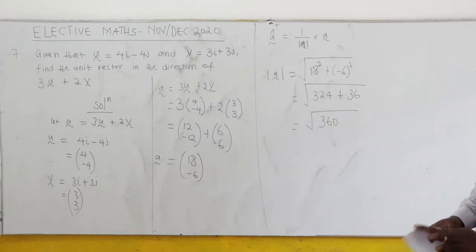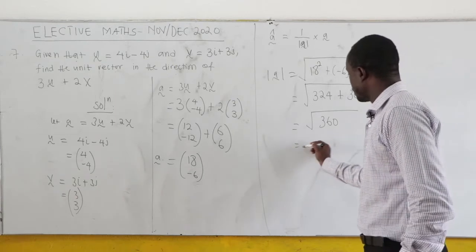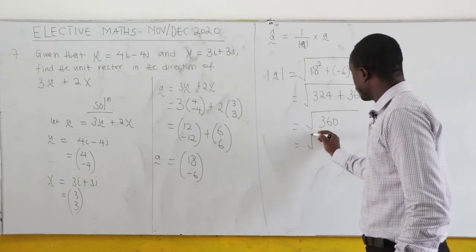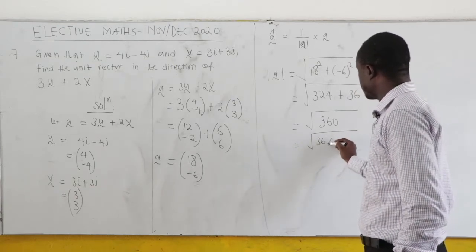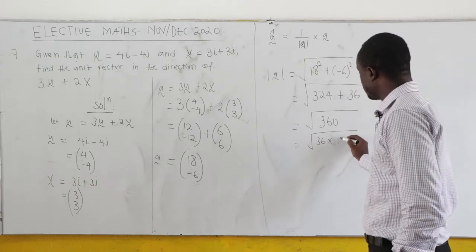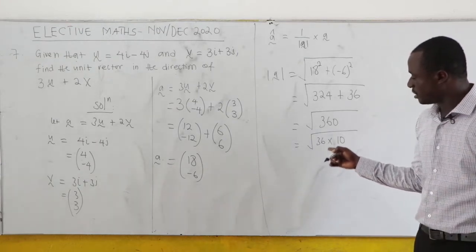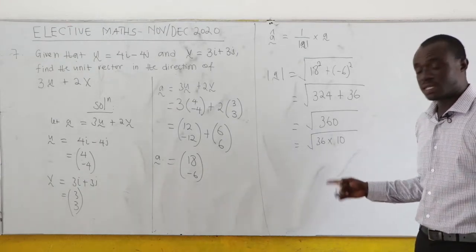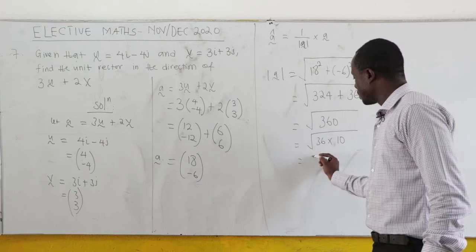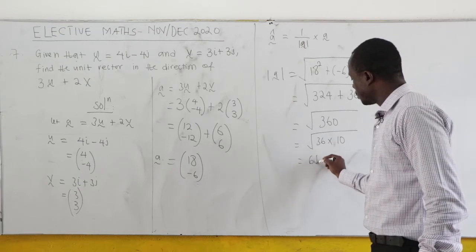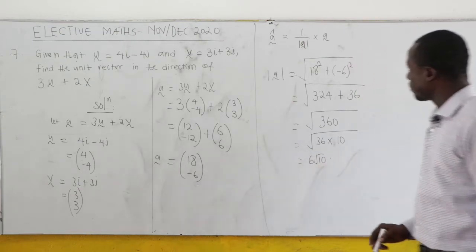We can express 360 as the square root of 36 times 10, which is the same as root 36 times root 10, giving us 6 root 10.